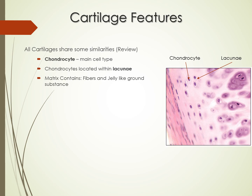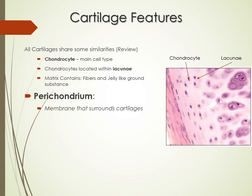Important things about cartilage: the cell type is chondrocytes. Chondroblasts create the extracellular matrix, and when they get stuck, they become mature chondrocyte cells living within lacunae — little circles around the cell. The extracellular matrix is very jelly-like, not as strong as bone, which is why chondrocytes get stuck in those lacunae, just like bone tissue.